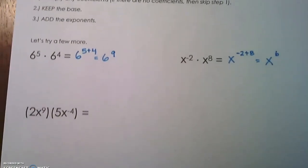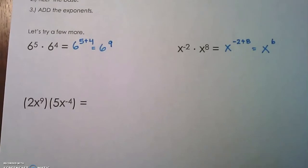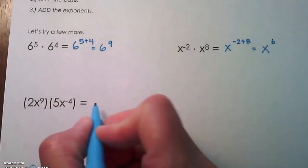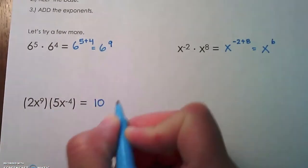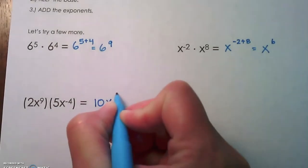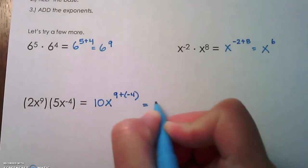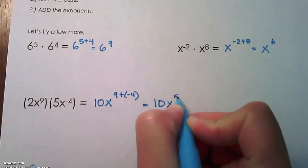Alright, now we've got coefficients. 2x to the 9th times 5x to the negative 4. 2 and 5 are coefficients. Go ahead and multiply those. Keep the base and add 9 plus negative 4, which is 10x to the 5th.